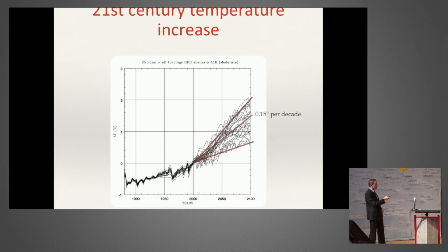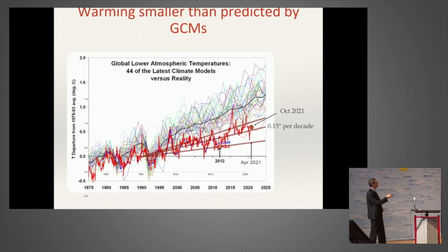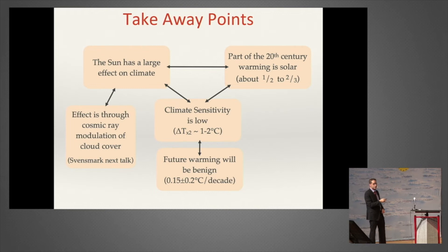In reality, you have an additional large forcing from the sun, and therefore you need a smaller climate sensitivity, which means you predict lower temperature increase over the 21st century. Running the same simulations that fit the 20th century 100 years into the future, you get a temperature increase of about 0.15 degrees per decade—compared to typical IPCC scenarios which are way higher. If you look at the warming over the past 30 years, it's completely consistent with our predictions and way smaller than what climate models give.